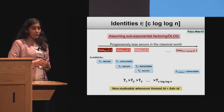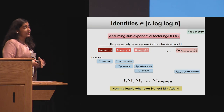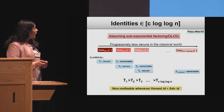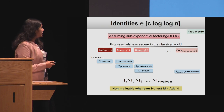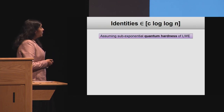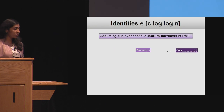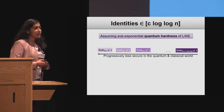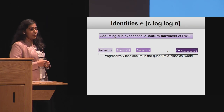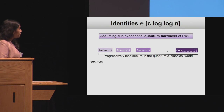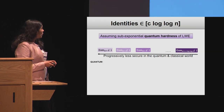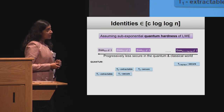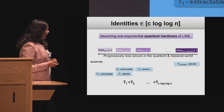So we have this sequence of commitments that are progressively less secure in the classical world. We will build another sequence of commitments that are progressively less secure both in the quantum and classical worlds, by relying on exponential quantum hardness of an assumption like LWE, LPN, or any lattice-based assumption. In the quantum setting, this means we have a sequence of commitments where the last commitment is the most secure one. These are secure whenever the adversary's identity is smaller than the honest party's identity — the opposite of what we saw previously.